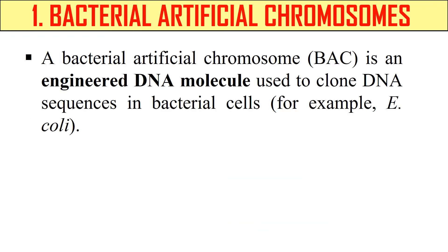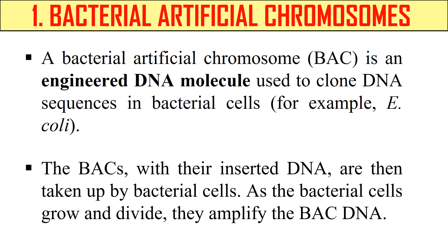First, Bacterial Artificial Chromosome. BAC is an engineered DNA molecule which is used to clone DNA in the bacterial cell — it can be used as a vector for DNA cloning. We insert our DNA sequence of interest into this bacterial artificial chromosome. The bacteria take up this BAC molecule and as the bacteria grow, the BAC also grows, so our DNA of interest multiplies with the BAC. In this way, BAC acts as a vector for DNA cloning.